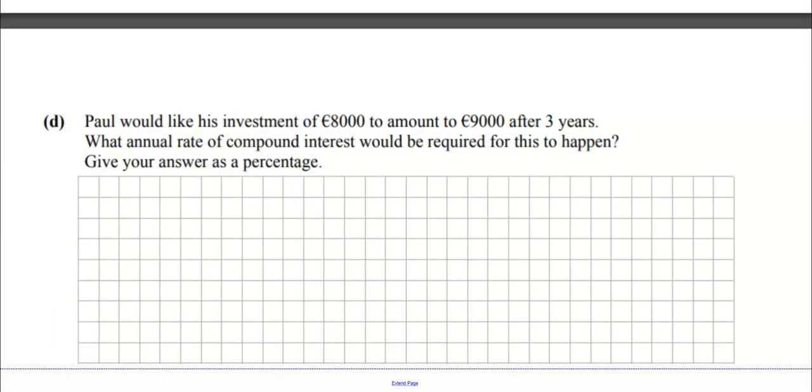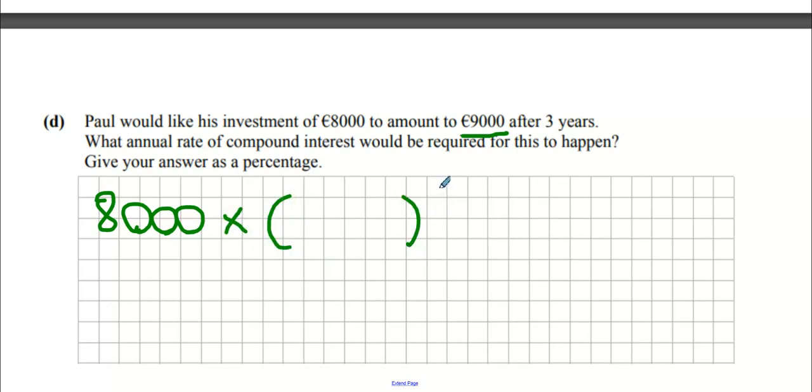He would like his investment of 8000 euro to amount to 9000 after three years. What annual rate of compound interest is required? 8000 multiplied by some magical number to the power of three. How many years are we investing for? Three. It has to be bigger than one to make it bigger, and the answer is 9000. We're going to divide 9000 by 8000.